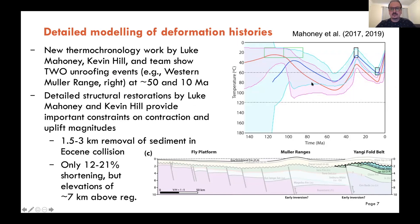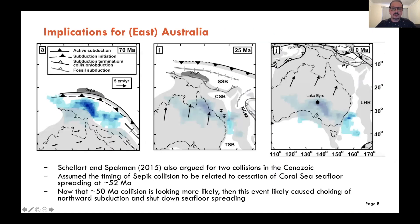More recent work from thermochronology from Luke Marnie demonstrates that there's an early Eocene collision with up to three kilometers of removal of sediment in the Eocene, and then another phase of collisional denudation in the last 10 million years or so. The idea that the Sepic terrain collided by about 50 million years ago to shut down the Coral Sea spreading was also alluded to in a paper by Shalat and Spackman in 2015, kind of simultaneously as we were working on it, showing a convergence in the scientific community about at least that collision.